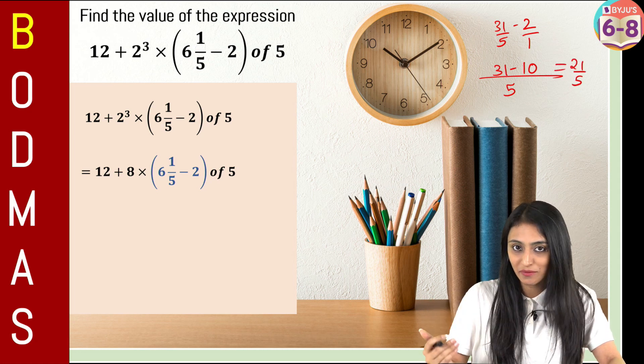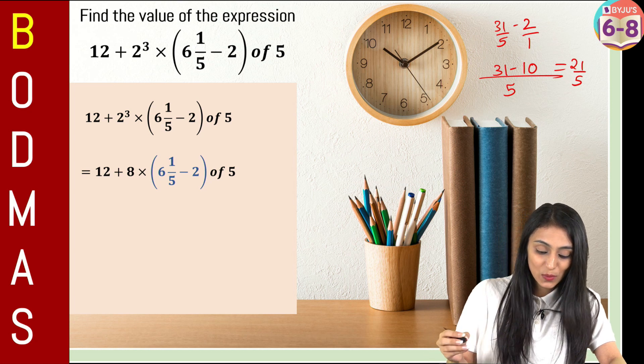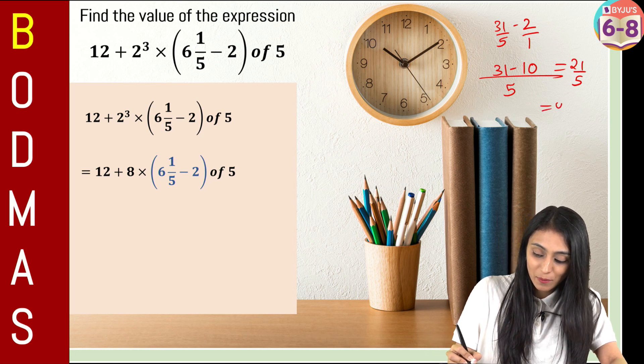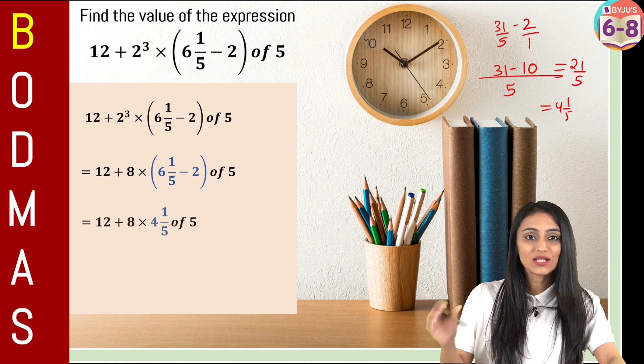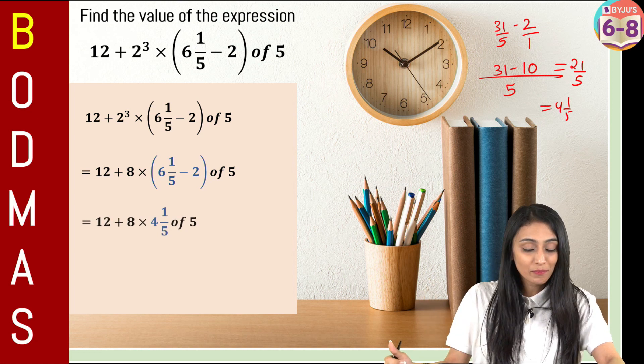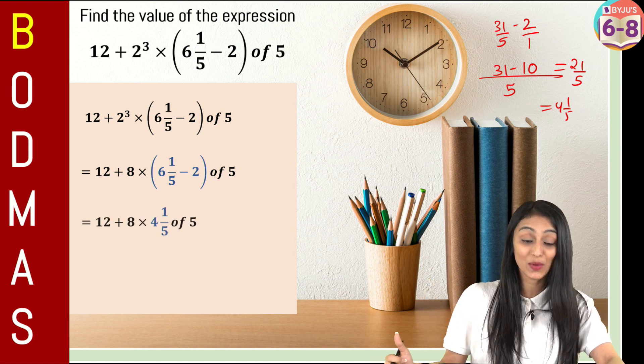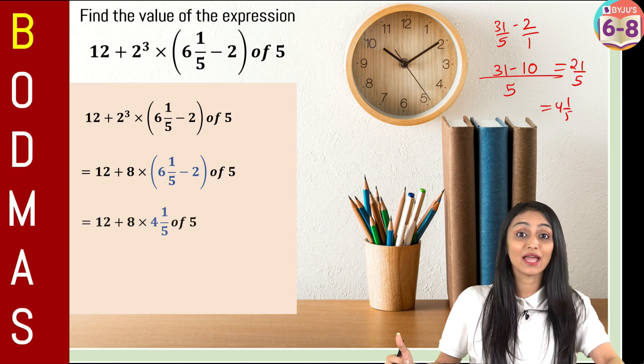Now let's divide 21 with 5. What are we going to get? We will be getting here 4 and 1 by 5. That means once I simplify the bracket, I get 4 and 1 by 5. So our step going to be 12 plus 8 times 4 and 1 by 5 of 5.